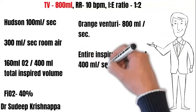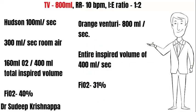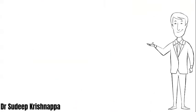The orange Venturi generates a total flow of 800 mL per second, which is far in excess of the 400 mL per second needed. The FiO2 continues to remain at 31%, as the entire inspired volume is met by the flow generated by the Venturi.